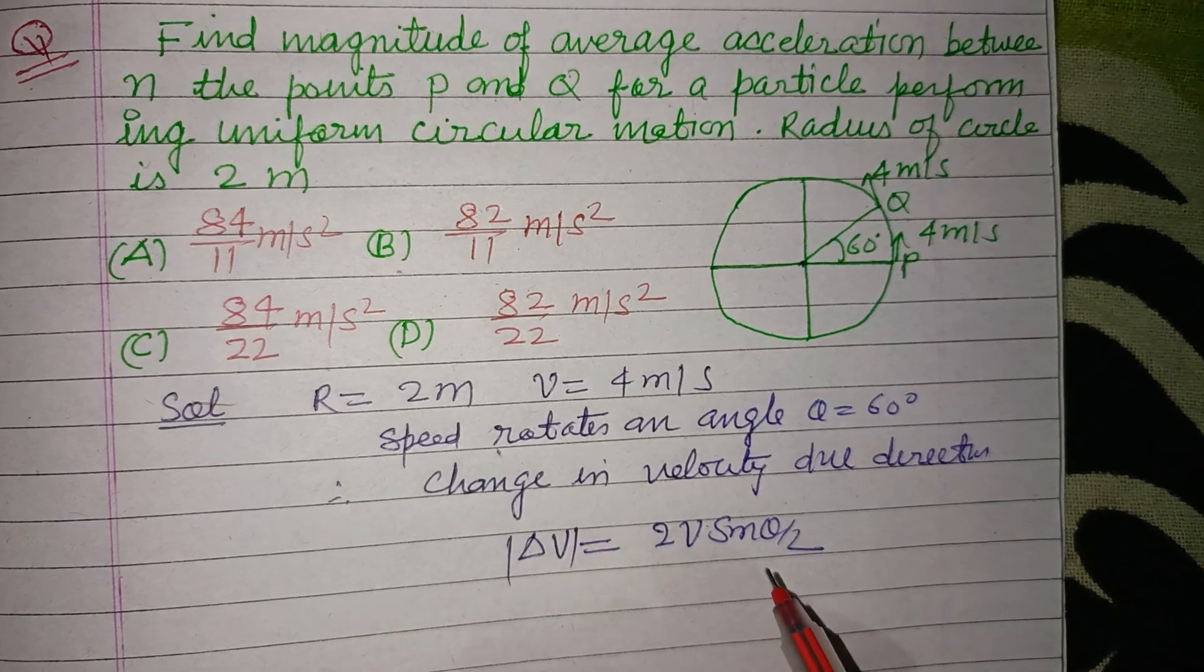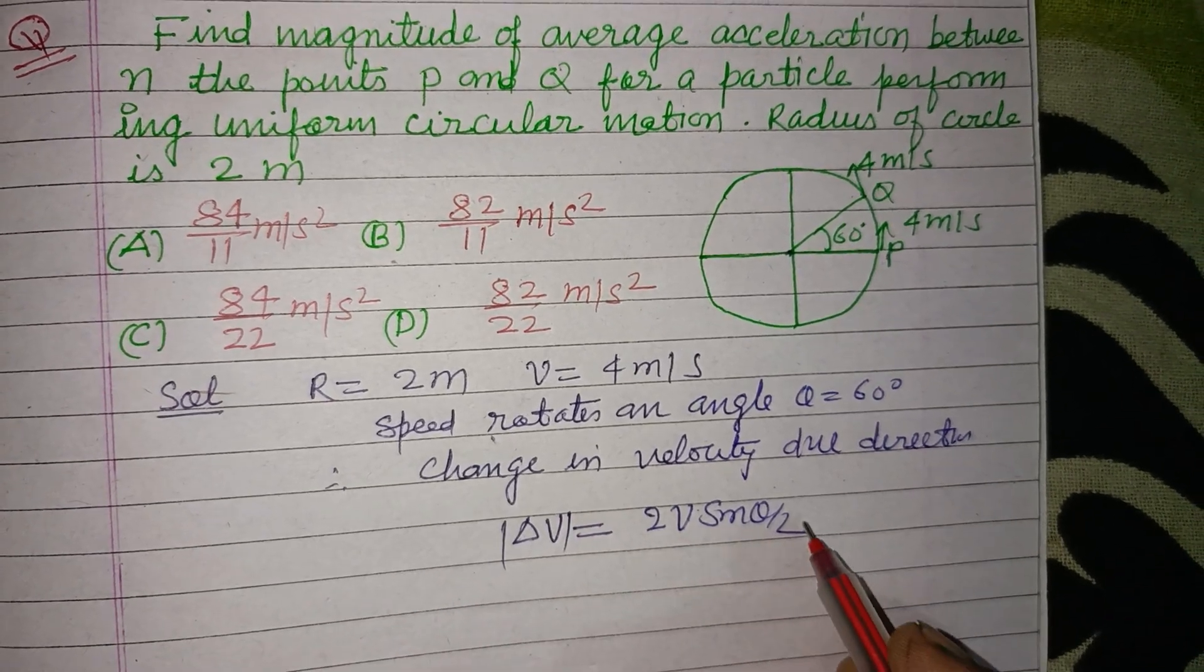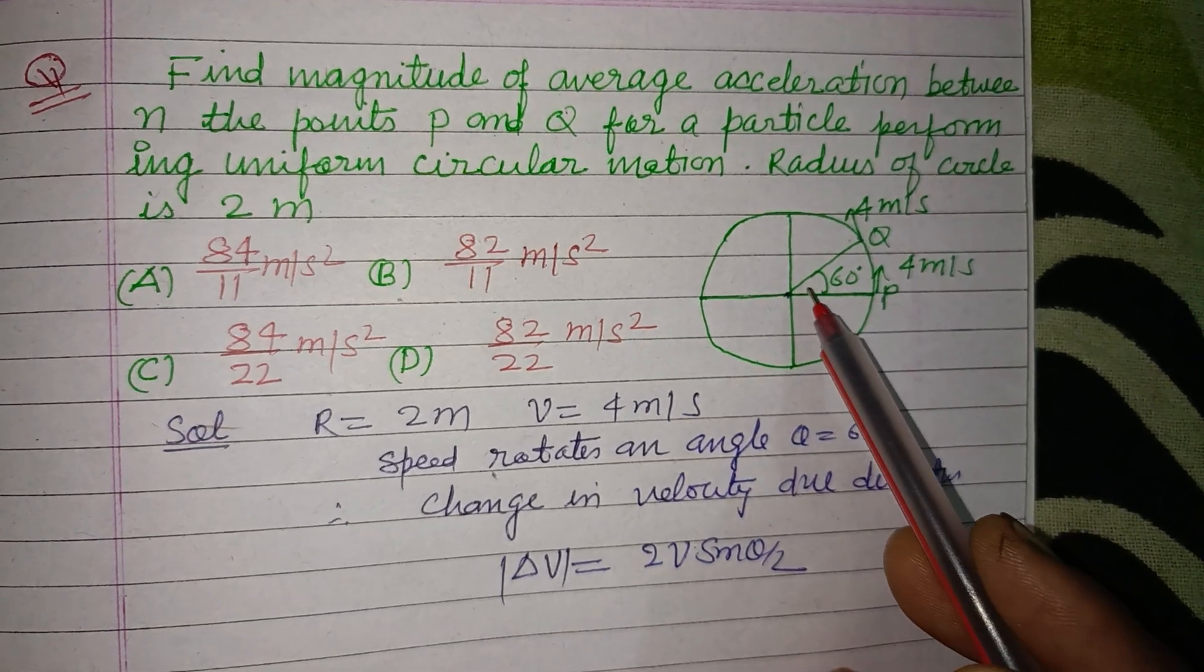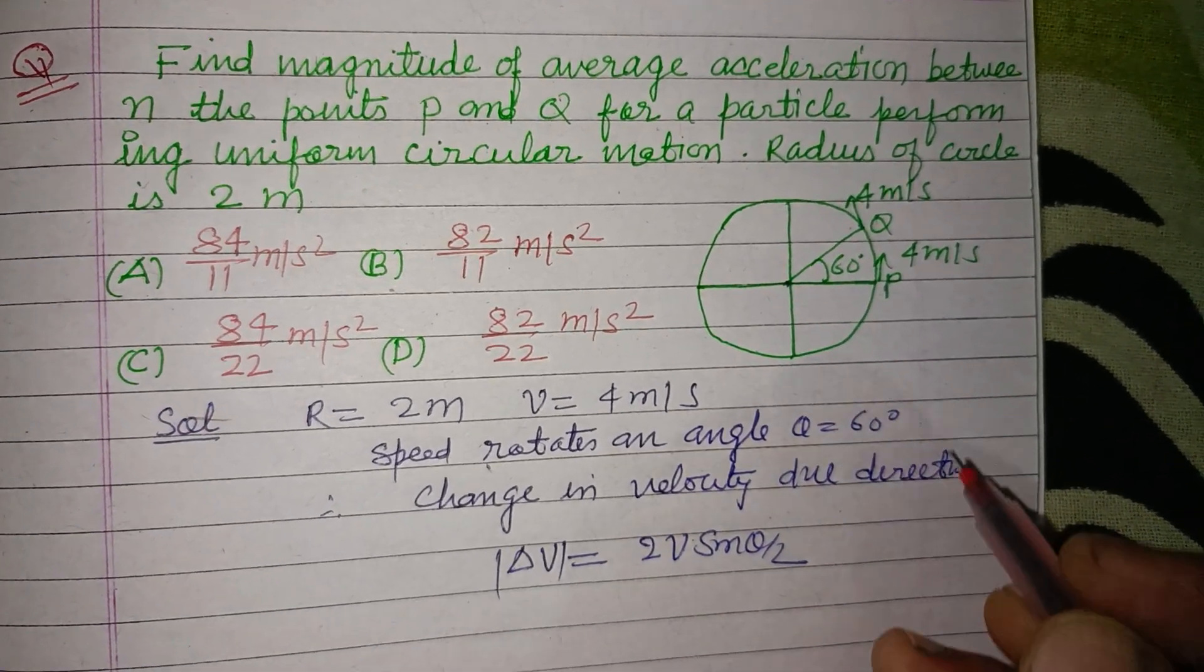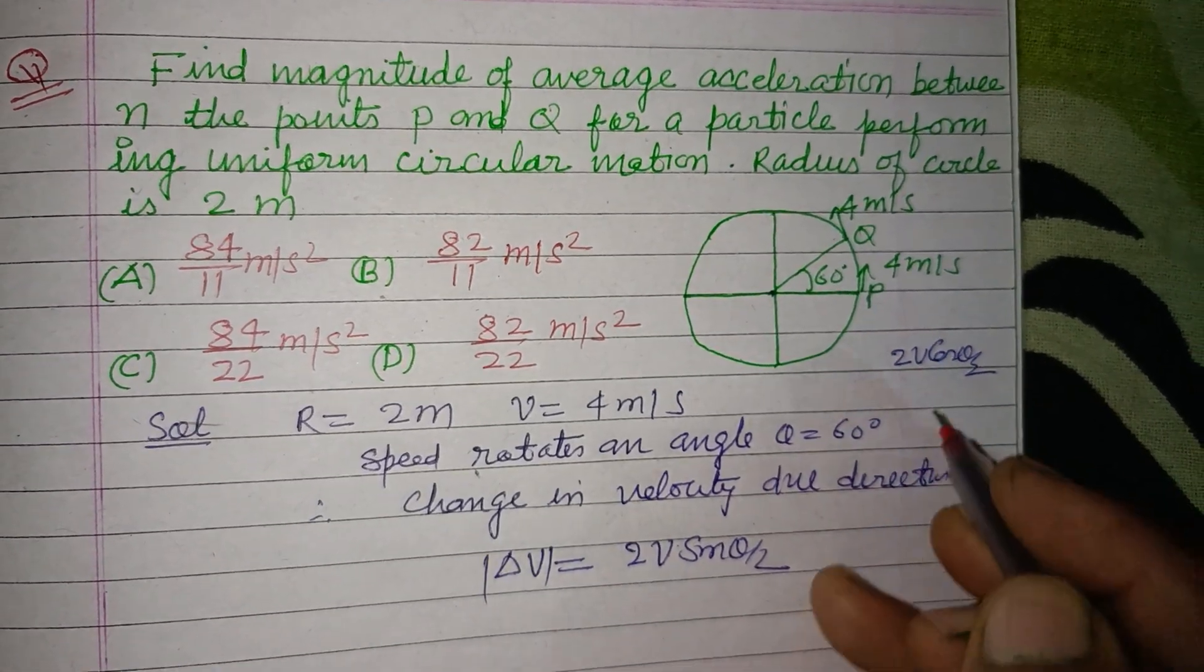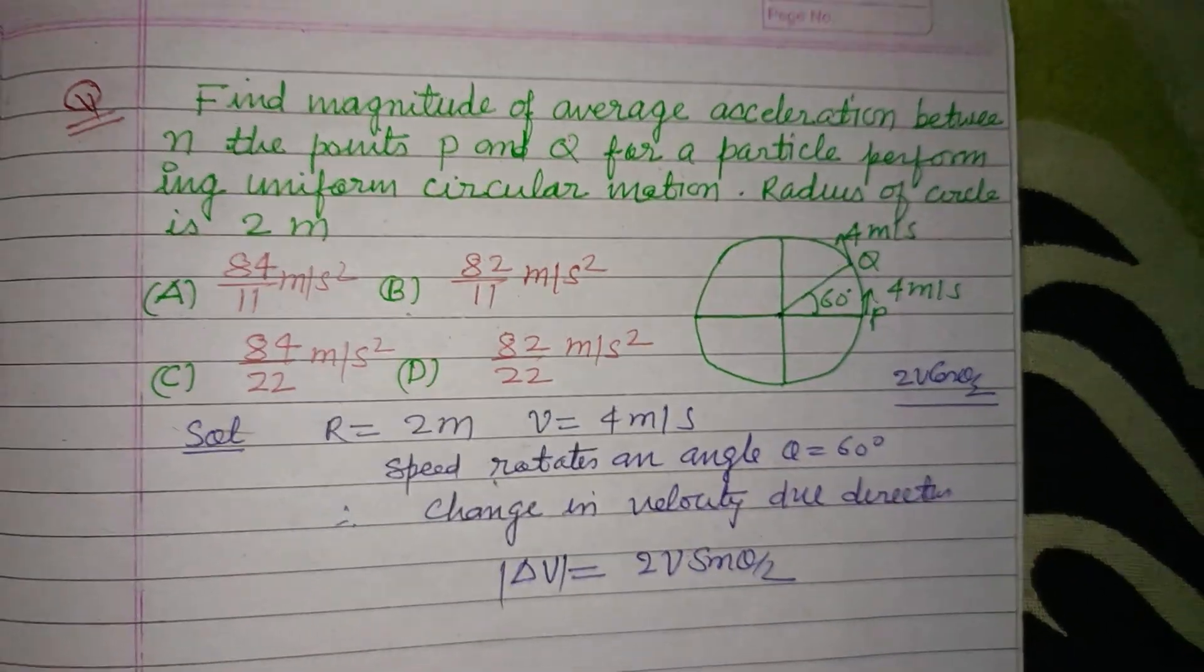then its velocity changes to v sin theta by 2 or its resultant velocity will be 2v cos theta by 2, by using vector addition method.